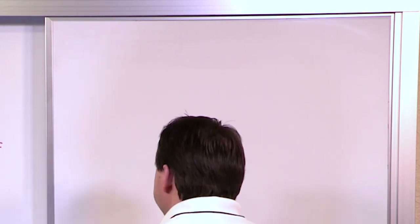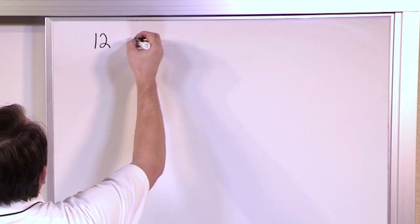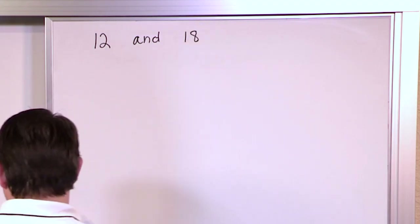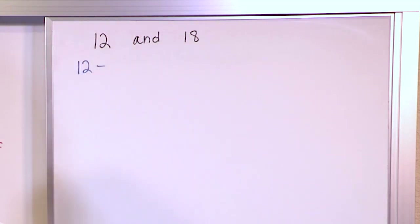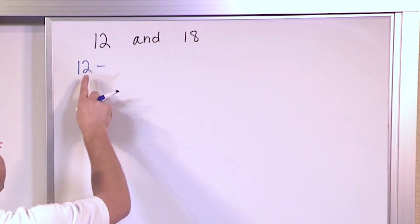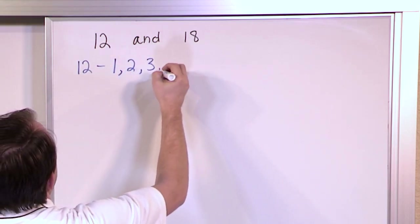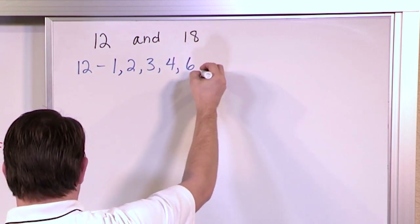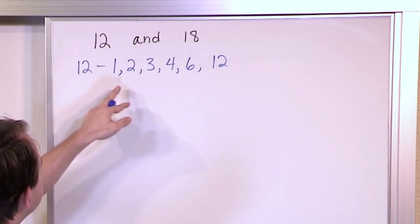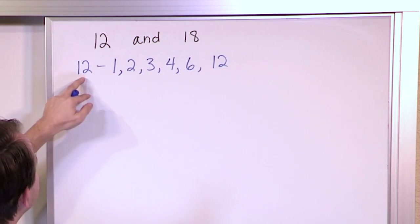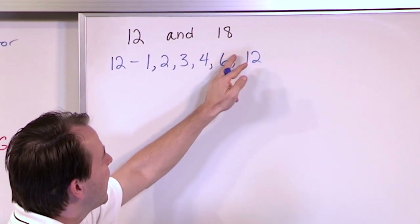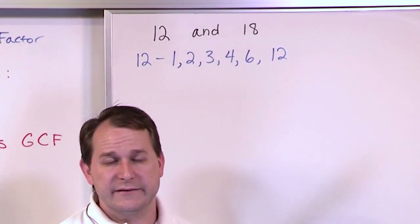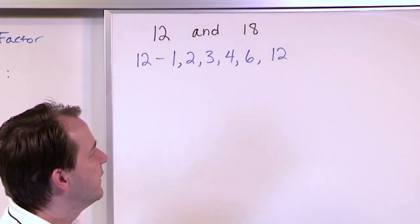This is an important topic as we get into more fraction work. Let's find the greatest common factor between 12 and 18. For the number 12, the factors are 1, 2, 3, 4, 6, and 12. 1 can divide into 12, 2 can divide into 12, 3 can divide into 12, 4 can divide into 12, 5 cannot divide into 12 so we don't list it, 6 times 2 is 12 so that's included, and 7 through 11 cannot divide into 12 evenly, so we leave them off.